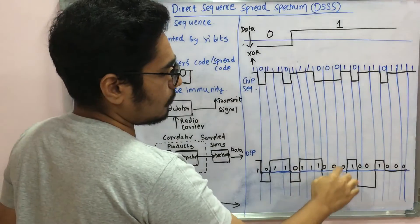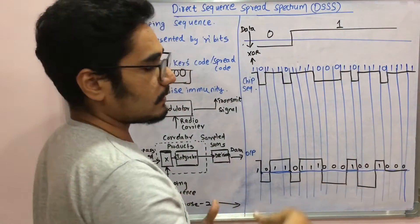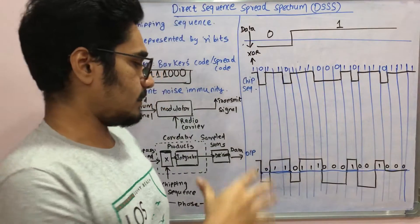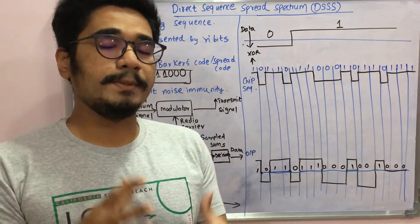Everywhere, one represents a high whereas zero represents a low. The chipping sequence is applied and you get the resultant data. The signal obtained will be difficult to determine whether it's a noise signal or a proper signal.